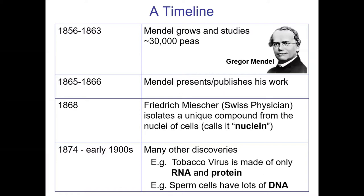DNA as a molecule was somewhat discovered in the late 1800s when chemists were starting to realize there was something in the nucleus, and they called it nuclein. Here's a really gross fact: Frederick Meissner was collecting white blood cells because they have large nuclei, and that's where he was getting his DNA from. Where do you get white blood cells? From pus. He was literally going to the hospital and collecting old bandages with lots of pus to do his research. Really gross, but it worked.